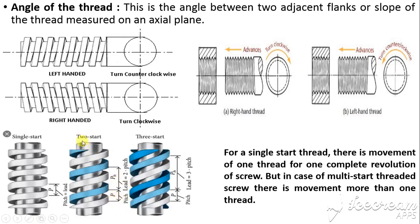Other types are two-start and three-start threads, which are called multi-start threaded screws. In a two-start thread, two threads move per one revolution. In a three-start thread, three threads will move in the mating part per one revolution.